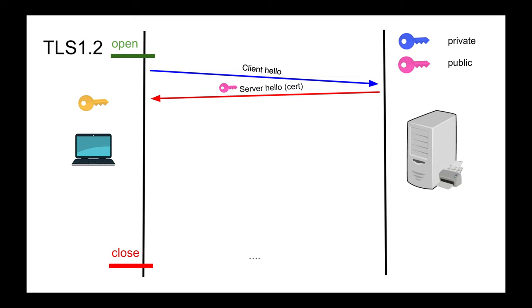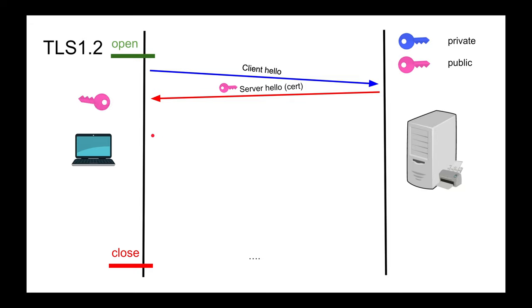The client then generates a master symmetric key that both sides will use to encrypt and decrypt messages. The client needs to get this key to the server securely, so it encrypts the symmetric key with the server's public key from the certificate.